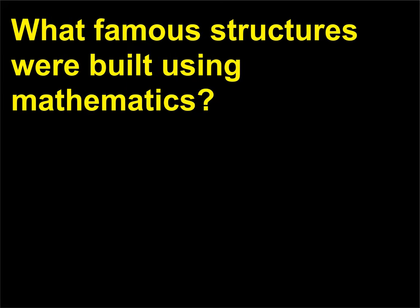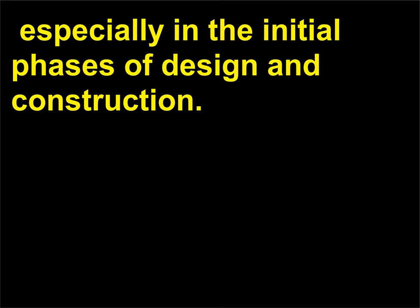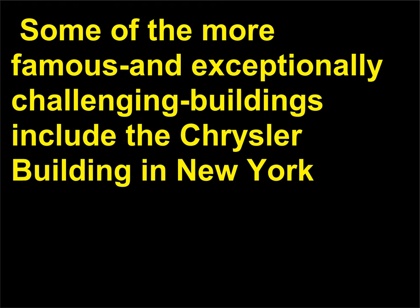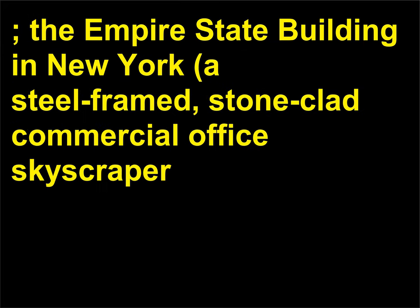What famous structures were built using mathematics? Actually, all famous structures needed mathematics, especially in the initial phases of design and construction. Some of the more famous and exceptionally challenging buildings include the Chrysler Building in New York — a steel-frame skyscraper built around 1930 that was the tallest building in the world before the Empire State Building — and the Empire State Building in New York, a steel-framed, stone-clad commercial office skyscraper.